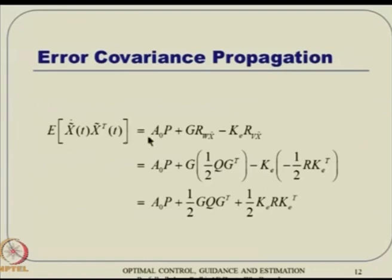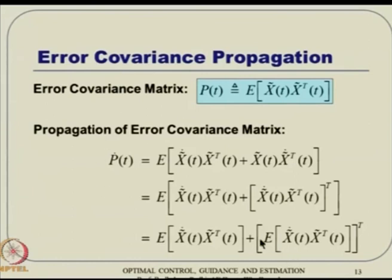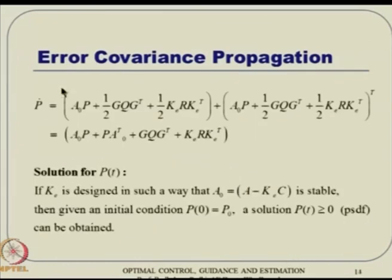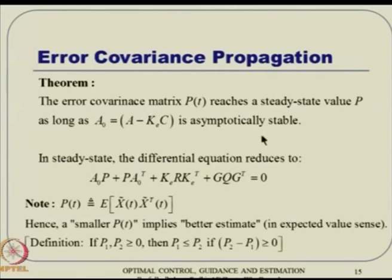P can be obtained by solving the filter Riccati equation — since all three optimality conditions must be satisfied together. After substituting the expression for K_e, we arrive at what is called the filter Riccati equation. So we solve this equation, evaluate the Kalman gain K_e = P*C^T*R^{-1}, and substitute it back into the observer equation.